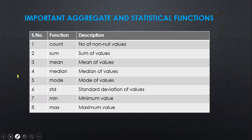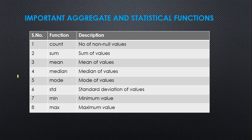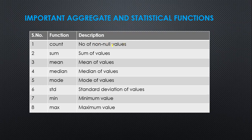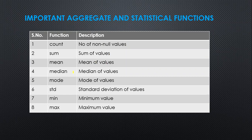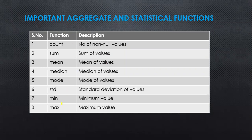There are some important aggregate and statistical functions in your syllabus. Count function is used to count the number of non-null values — that is, values which do not contain NaN or None. Sum is used to find out the sum of values. Mean is used to find out the mean of values. We also have median, mode, standard deviation, minimum, and maximum — we will see all these one by one.